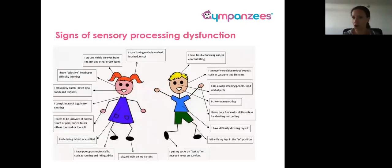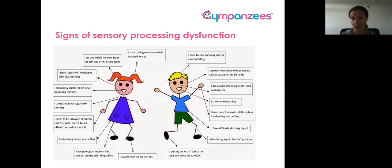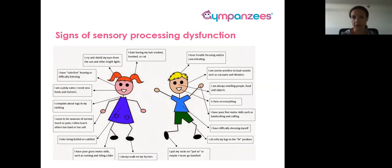On this slide there are a lot of different comments, and you might identify your child or family member based on some of these statements. A few that can be indicative of sensory processing dysfunction: I'm a picky eater and I resist foods and textures; I complain about tags in my clothing; I always walk on my tiptoes; I put my socks on just so, or maybe I never go barefoot; I hate being tickled or cuddled; I chew on everything; I have poor fine motor skills such as handwriting and cutting; I am overly sensitive to loud sounds such as vacuums and blenders; I hate having my hair washed, brushed, or cut. This is just to name a few.